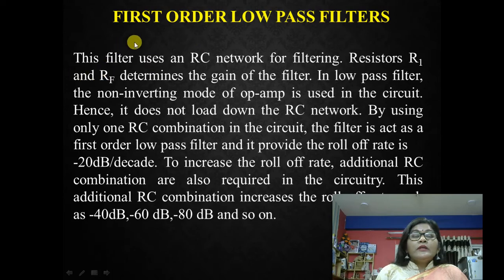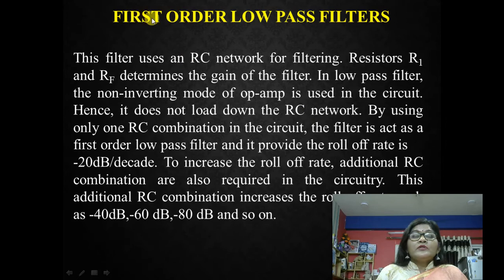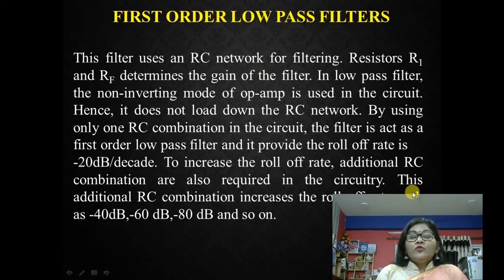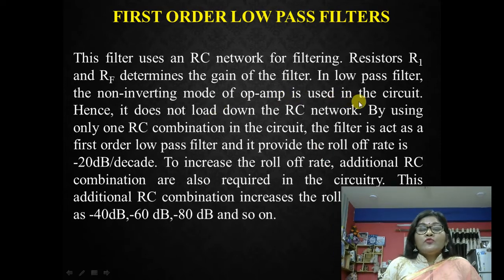Here we will explain the first order low pass filter. When we use only a single RC combination, this acts as a first order low pass filter, because in the low pass filter the RC circuitry acts as the filtering element. This filter uses an RC network for filtering. Resistors R1 and RF determine the gain of the filter. The non-inverting mode of the op-amp is used in the circuit, so it does not load on the RC network. Using only one RC combination, the filter acts as a first order low pass filter and provides a roll-off rate of minus 20 dB per decade.